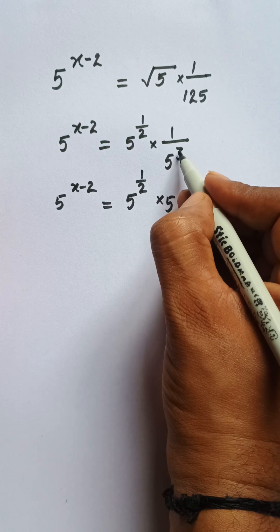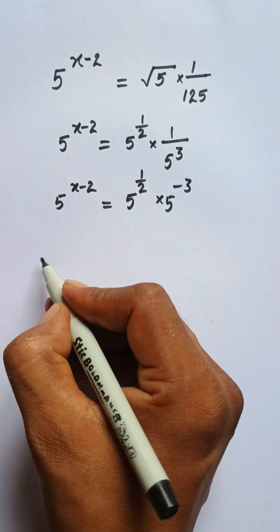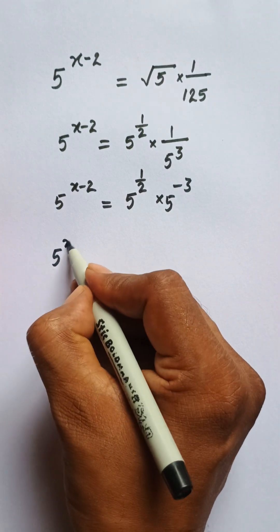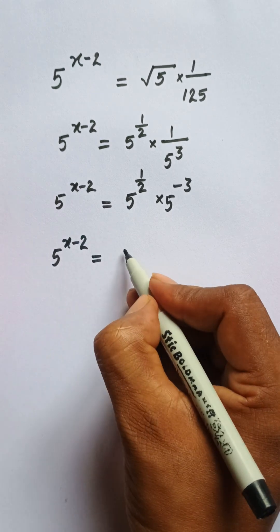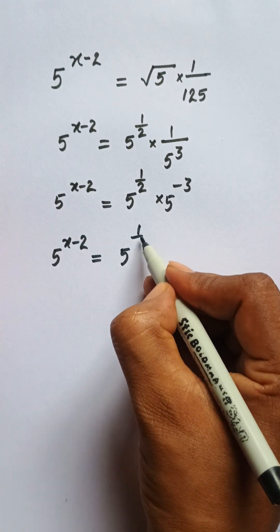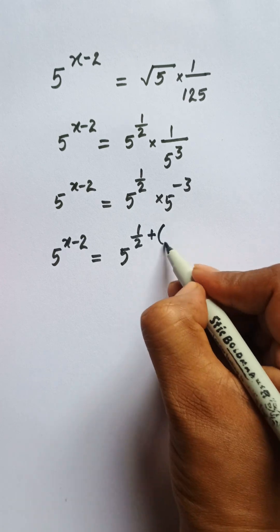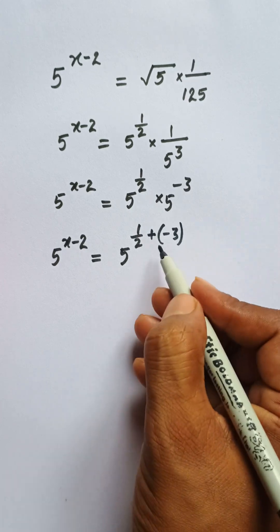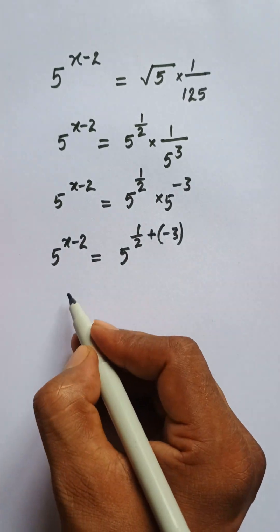Then we have 5 to the power x minus 2, and we have 5 to the power 1/2 plus minus 3.